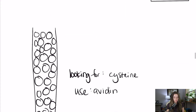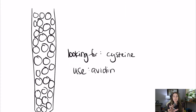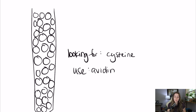Moving on to column chromatography. Column chromatography is a big category that includes affinity chromatography, ion exchange, and size exclusion chromatography. Gas chromatography uses a column too, so maybe it counts — but we'll go over all of those in detail.